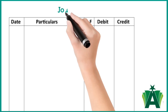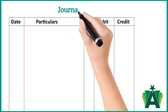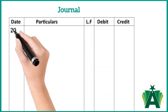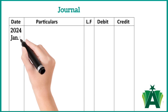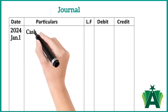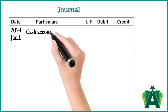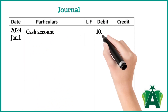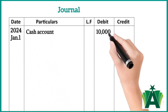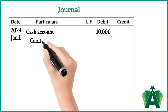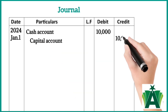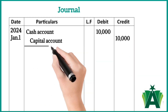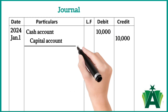Started business with cash $10,000. Debit cash account for $10,000 — this increases the value of the asset cash. Credit capital account for $10,000 — this increases the amount of owner's equity.